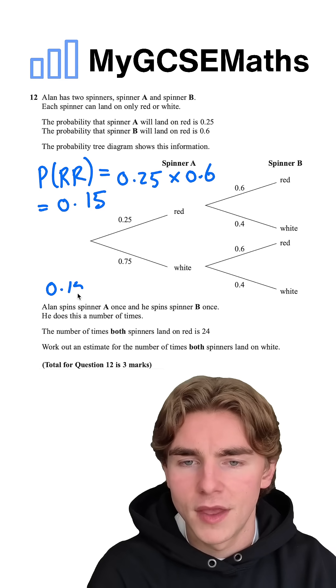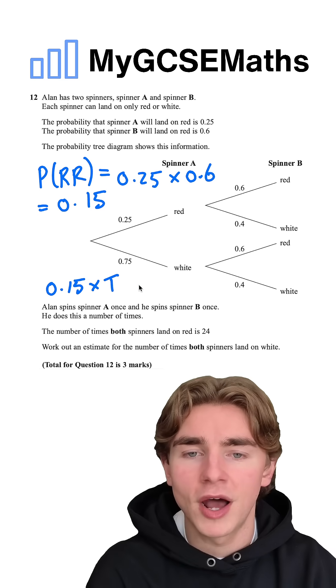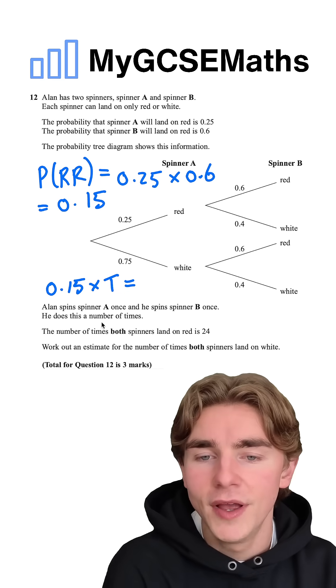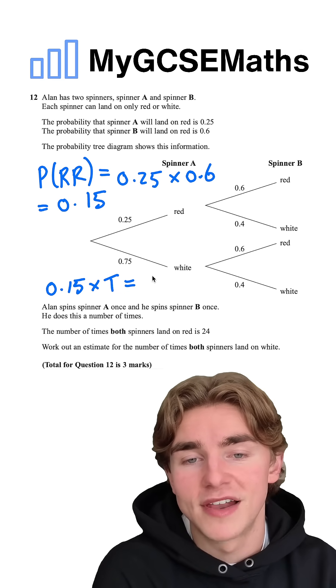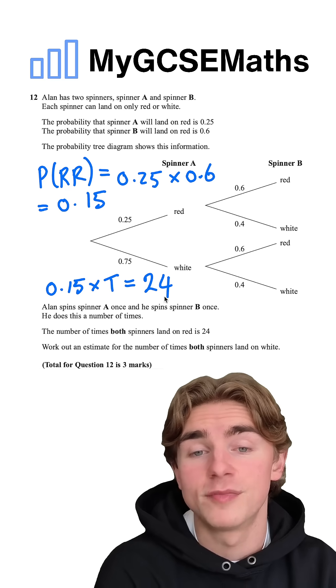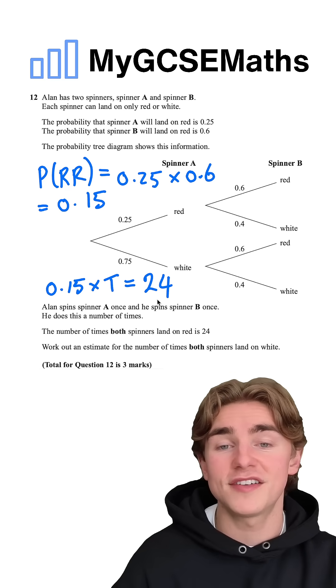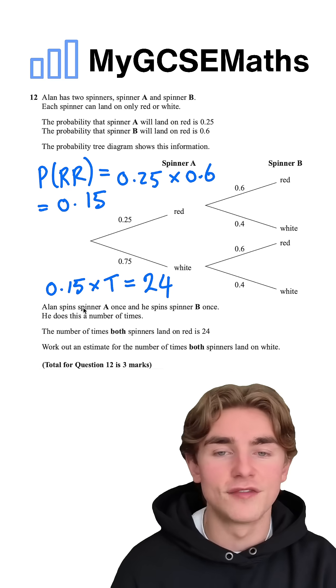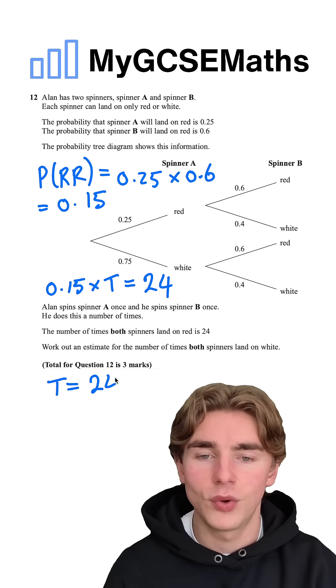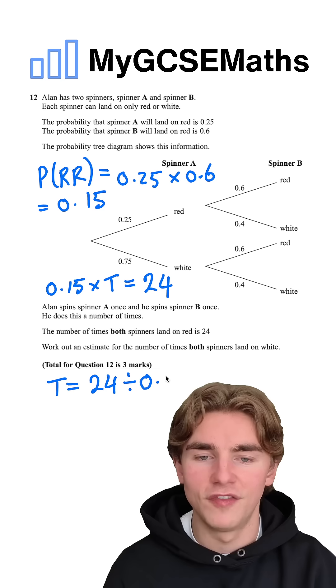0.15 times the total number of spins should equal the number of times both spinners land on red, which is 24. So 0.15 times the total number of spins equals 24. We can divide both sides by 0.15. The total number of spins equals 24 divided by 0.15,